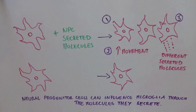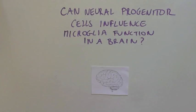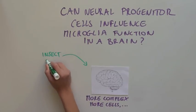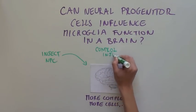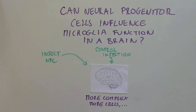But the authors went even further and wanted to see if NPCs could control microglia function in a brain, with all of the added complexity, all of the other cell types, neurons, etc. So the authors injected NPCs into mouse brains and looked at the microglia.